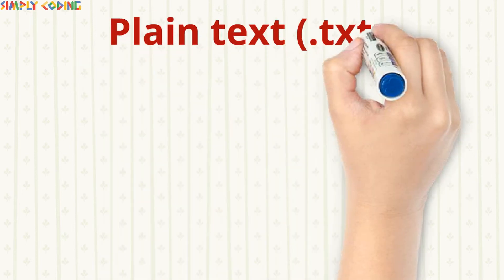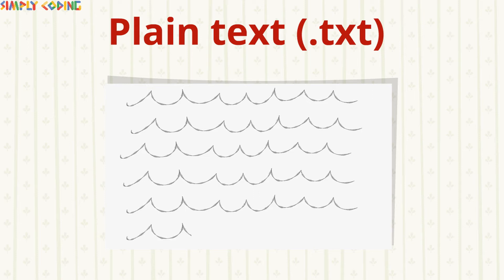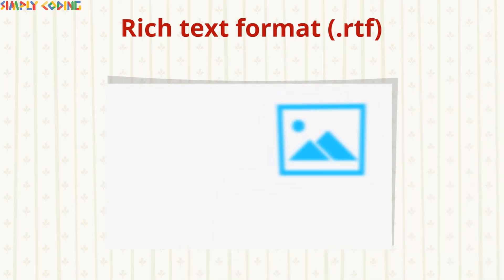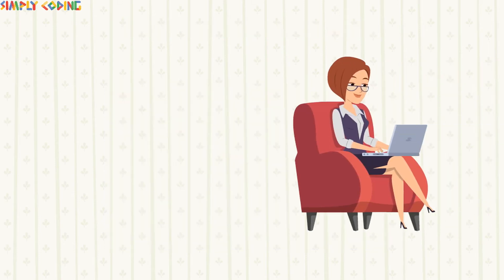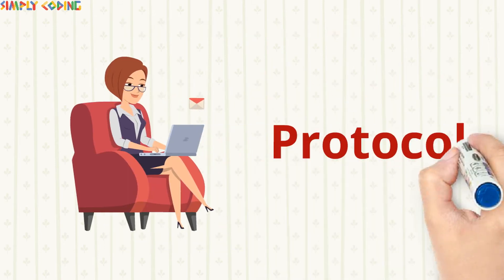There are two main email formats. First is plain text or .txt, which can be read by anyone regardless of the email application they use. It does not offer any text formatting options. Then there is Rich Text Format or .rtf format, which allows text formatting options and inserting pictures and graphics. It cannot be read by all email applications.